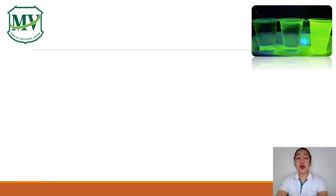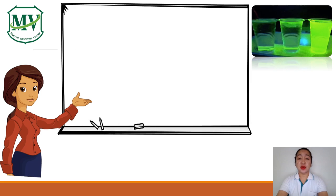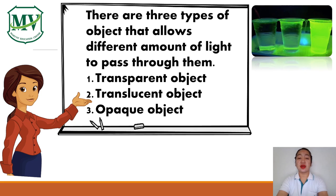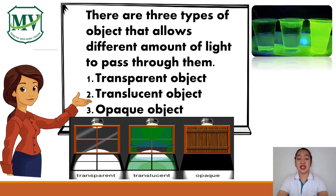Since we already talked about light, next we will talk about object. Remember, objects are things that can be seen or touched. There are three types of objects that allow different amounts of light to pass through them: first is transparent object, second is translucent object, and third is opaque object.